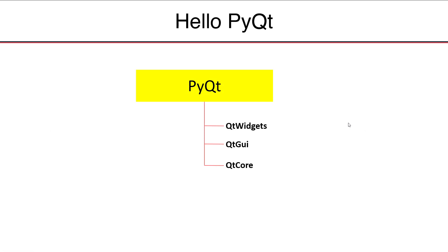There are essentially three main modules in PyQt: QtWidgets, QtGui, and QtCore. QtWidgets defines the graphical user interface widgets, layouts, and other high-level GUI components. QtGui contains GUI-specific data wrapper classes and utilities. QtCore contains low-level data wrapper classes, utility functions, and non-GUI core functionality. These three modules will be used in nearly any PyQt program we write.